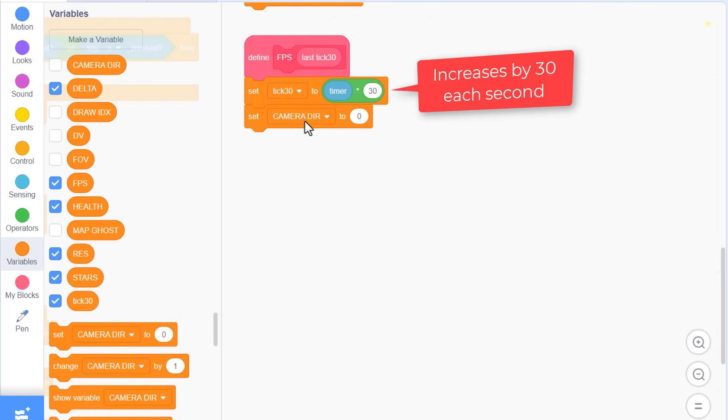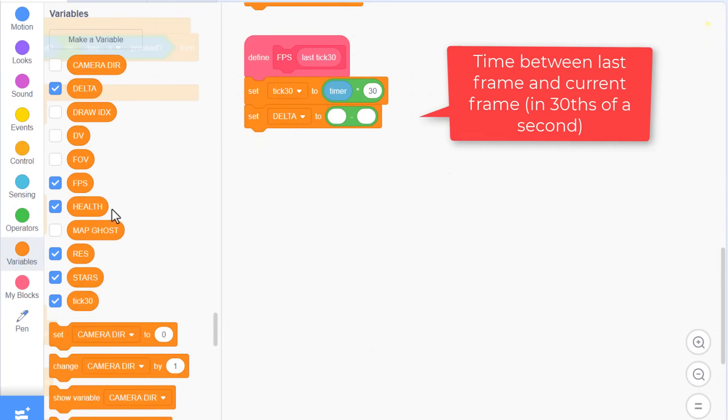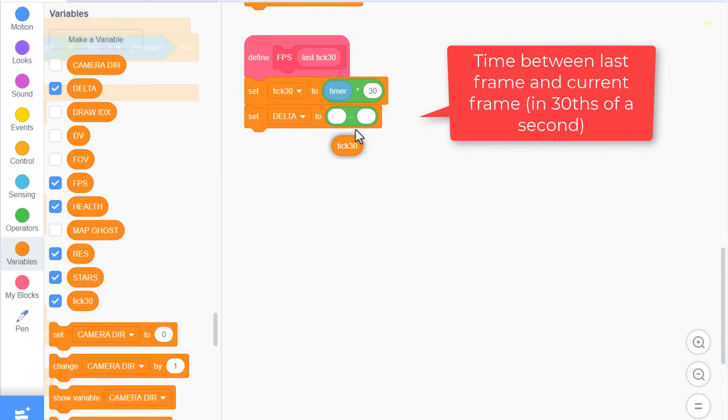Now we calculate the delta. That's the time between the last frame and this one. So set delta to tick 30, the last tick 30 value. Cool.